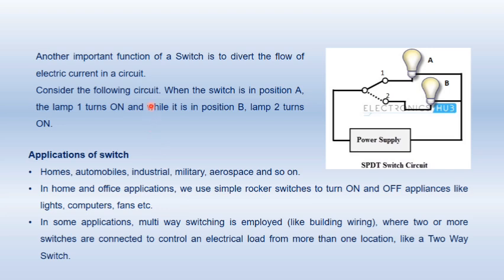Another very important function of a switch is to divert the flow of electric current in a circuit. In this diagram, you can see we have two positions to which a switch can be connected: position 1 and position 2. If we connect the switch to position 1, it will pass the current from the power supply to bulb A and it will glow. But if we change the position to position B, it will pass all the current from the power supply to bulb B and now bulb B will glow. In this way it can divert the flow of electric current from the power supply to the load.